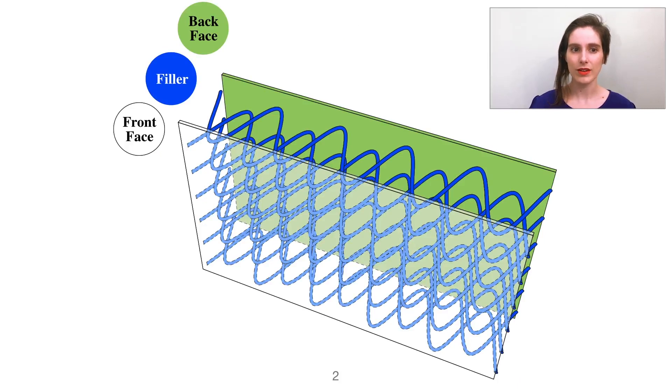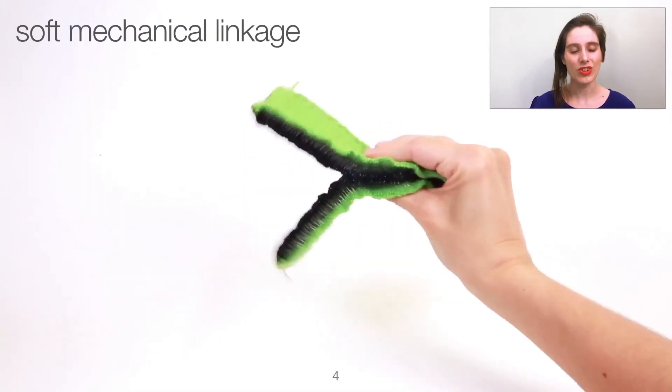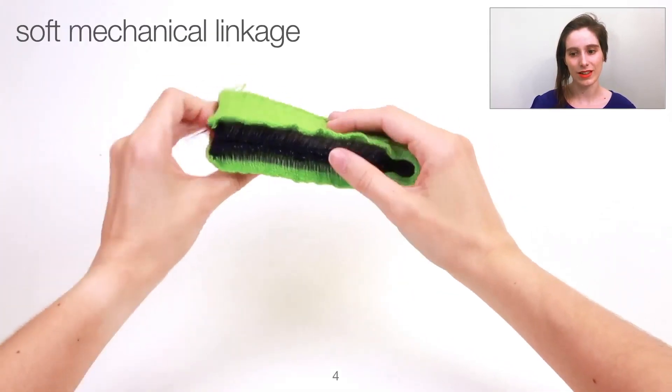Spacer fabrics are a layered fabric structure that can be produced on a V-bed weft knitting machine. They have a characteristic sandwich structure with two face fabrics and this puffy filler area between them. When the filler is made from a semi-stiff yarn such as a nylon monofilament, otherwise known as fishing line, the whole structure can act as a soft mechanical linkage.